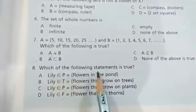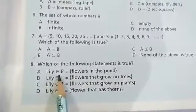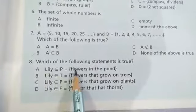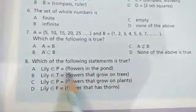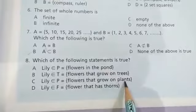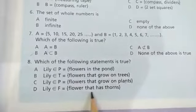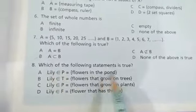Which of the following statement is true? Lily belongs to P = {flowers in the pond}. Option A is the correct answer, because lily grows in ponds, not on trees or plants or thorns. So option number A is the correct answer.